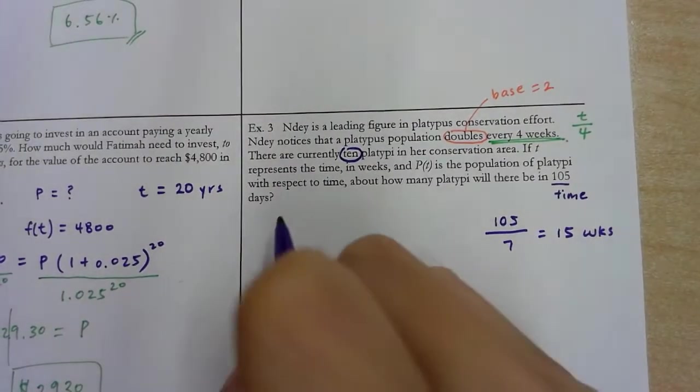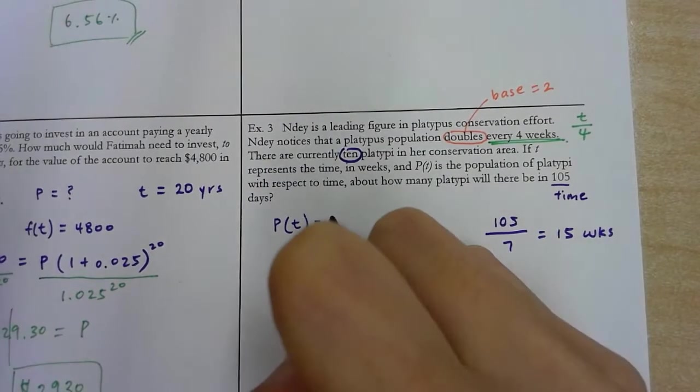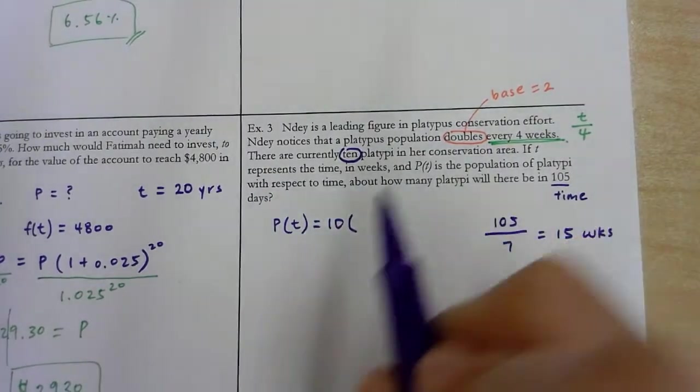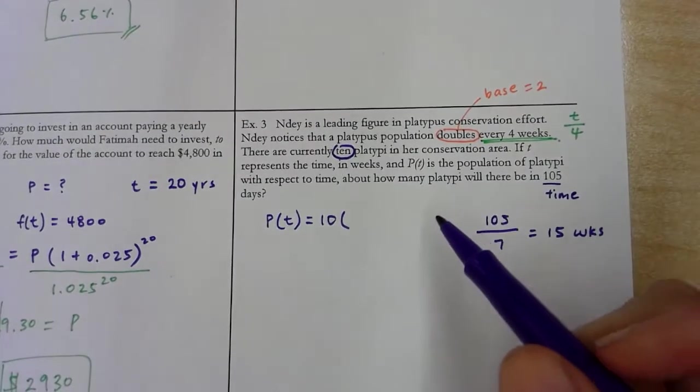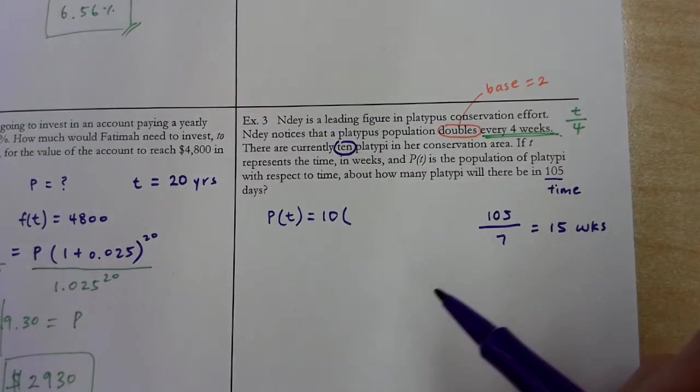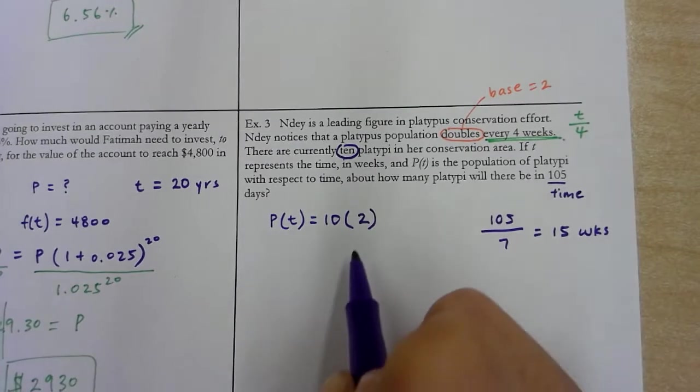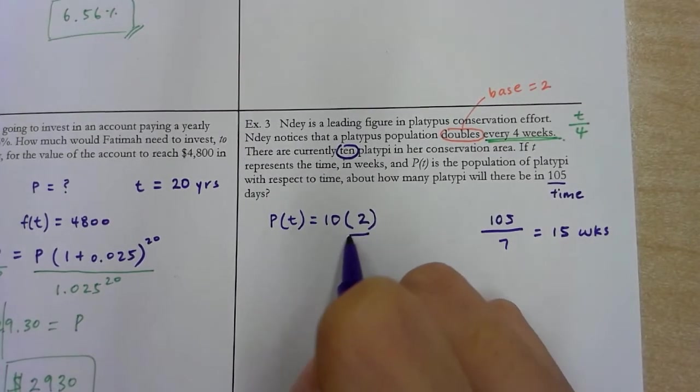I'll set up the equation. So P(t) = 10(2)^(t/4). And actually, scholars, here, the value of r is going to be actually 1. Remember, just doubling is base 2, right? Then remember, back to the growth formula. This base is made up of 1 plus r. If 1 plus r is equal to 2, r must be 1, right? It's going back to that idea of like double something. You're increasing it by 100%.